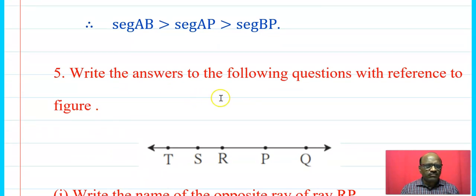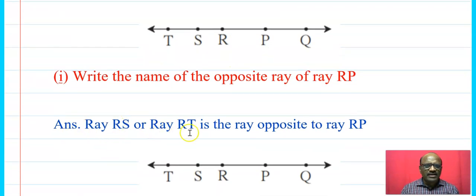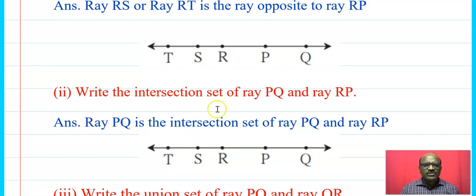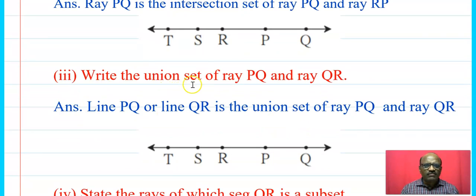Write the answers to the following questions with reference to the figure. Write the name of the opposite ray of ray RP. The opposite ray of ray RP is ray RS or ray RT. Next, write the intersection set of ray PQ and ray RP. The intersection of ray RQ and ray RP gives ray PQ. Therefore ray PQ is the intersection set of ray PQ and ray RP.